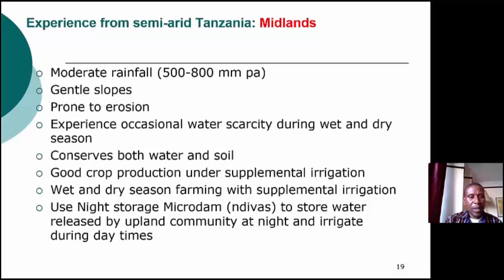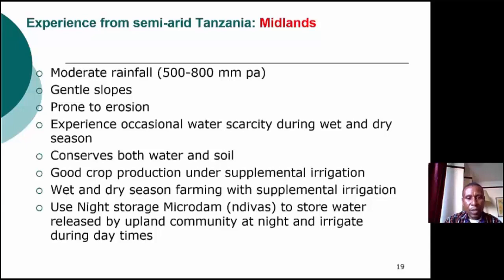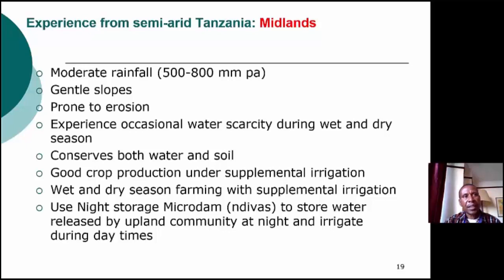People in the midlands normally get rainfall of 500 to 800 millimeters per annum, with fairly gentle slopes that are still prone to erosion. They experience occasional water scarcity during both wet and dry seasons. This provides an incentive to conserve both soil and water. Crop production is normally assured only under supplemental irrigation. Wet and dry season farming is possible, but they normally reduce the size of cropping areas during the dry season because water is insufficient. The midlands are where you find night storage structures.